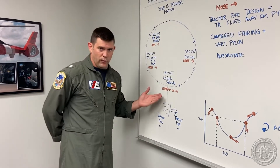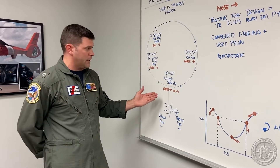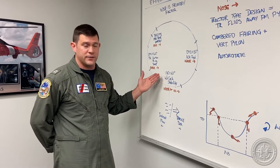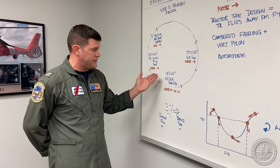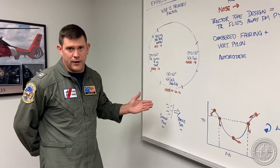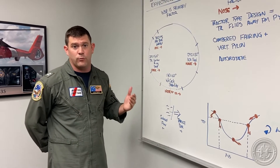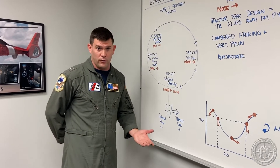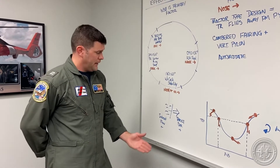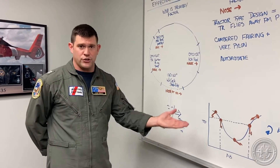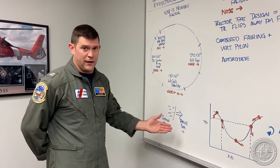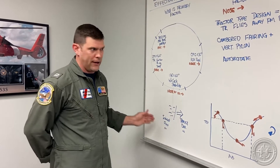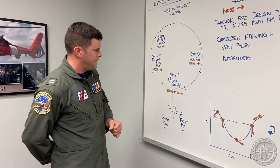When the wind is coming from the six o'clock position of the helicopter — approximately 180 plus or minus 60 degrees — it's a phenomenon known as weathercock stability, also commonly referred to as the barn door effect. This can push the tail of the aircraft either right or left.